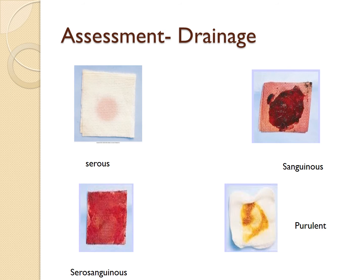We also want to assess the drainage of the wound. The first type is serous drainage, which is expected. The second is serosanguinous — a lot of drainage, but it may be benign depending on the circumstance. The third is sanguinous, which is bloody drainage. And the last is purulent drainage, which is an indication of an infection.